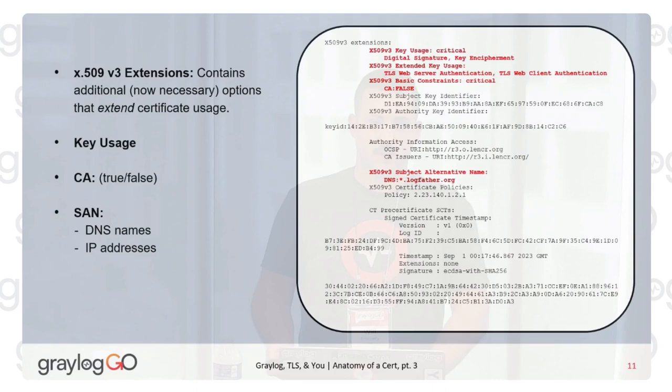The next part has the extensions, which is an extension on the X.509 protocol. There's a key usage configuration where the certificate can only be used for certain things — in this case, digital signature and key encipherment. Extended key usage is more of the same. The CA flag needs to be false for all service certificates because they're not CAs, but for CA certificates, CA would be set to true.